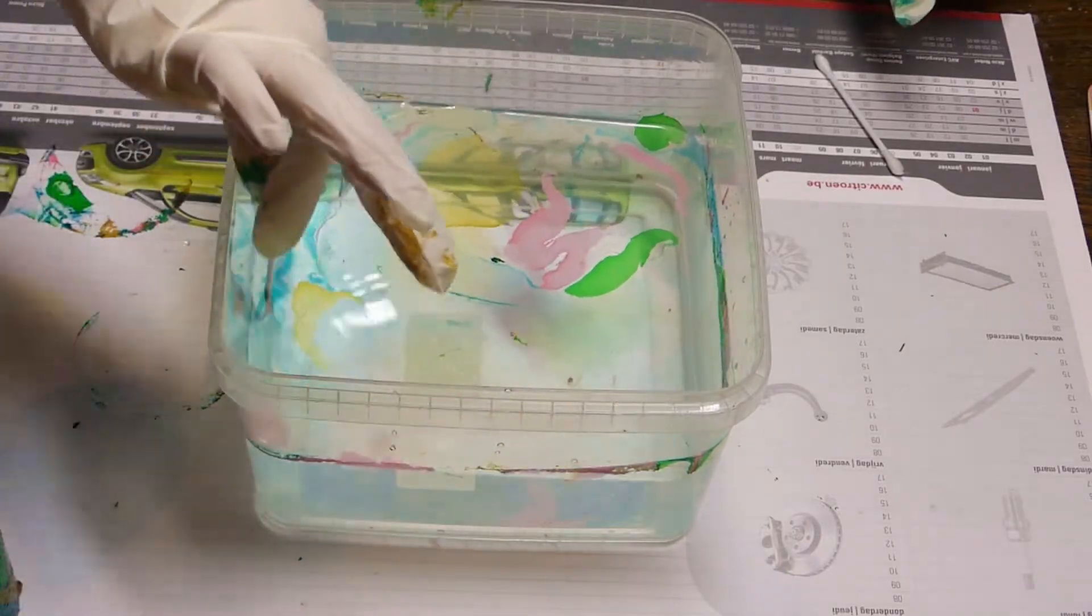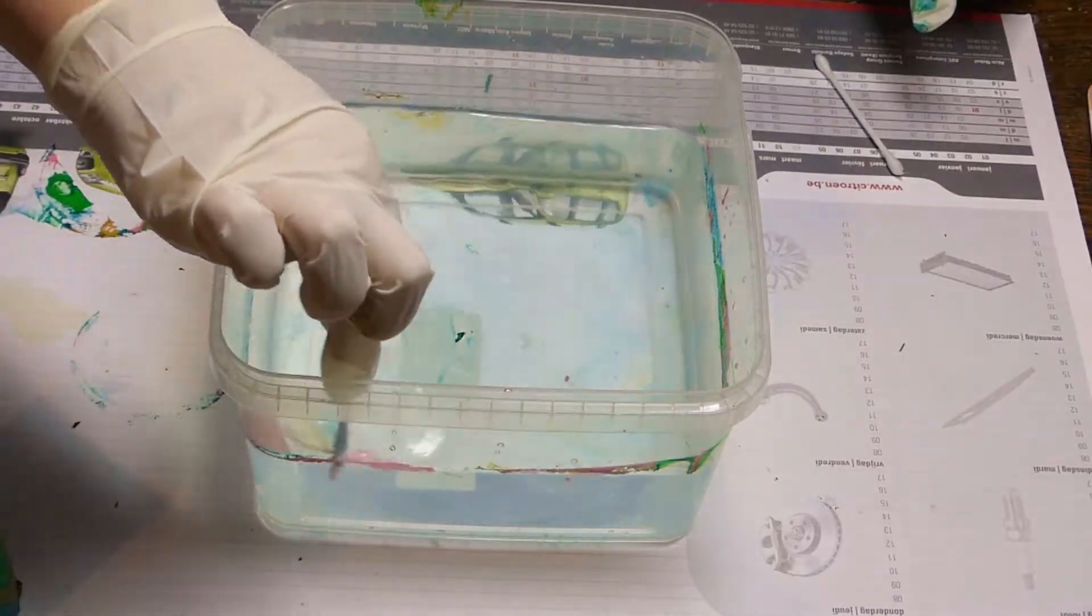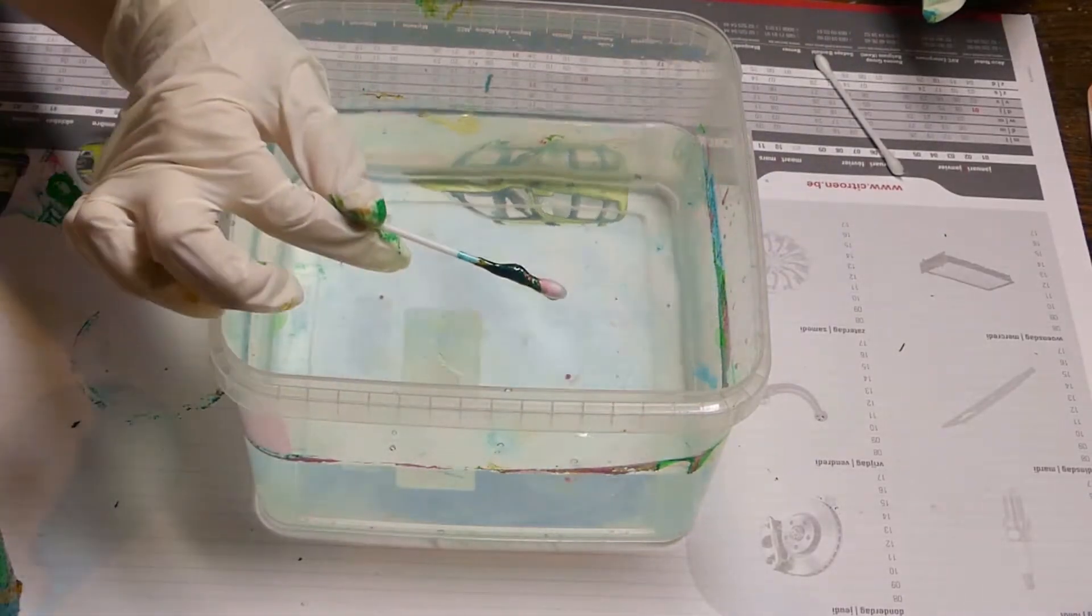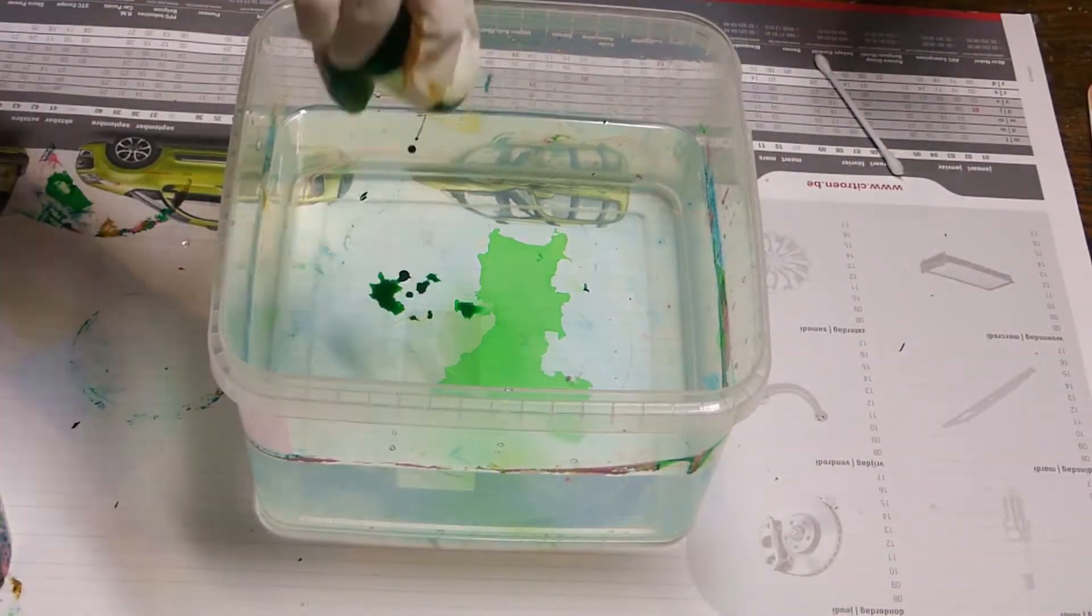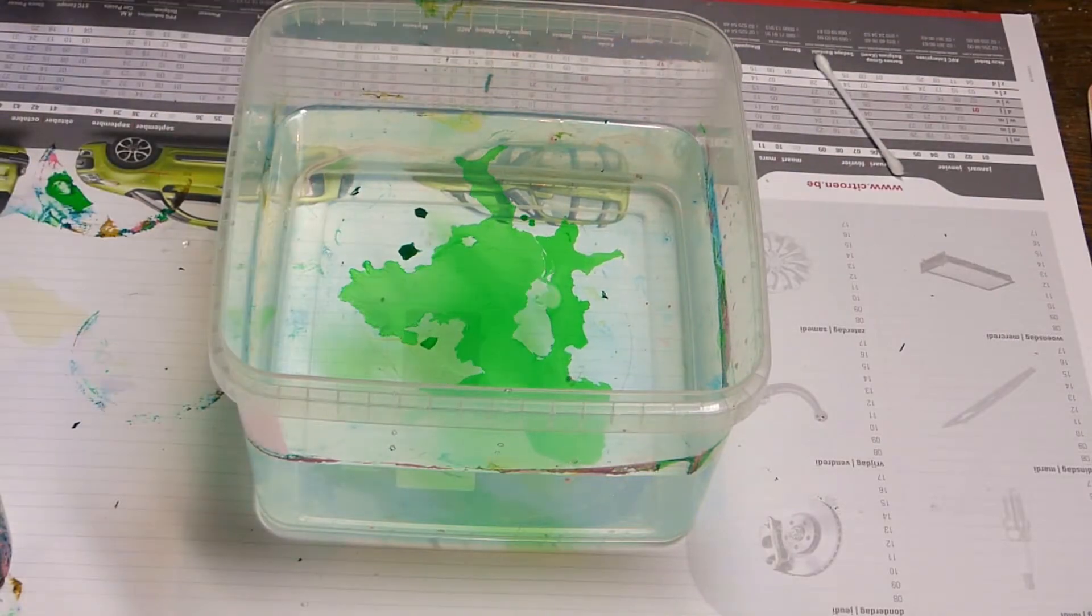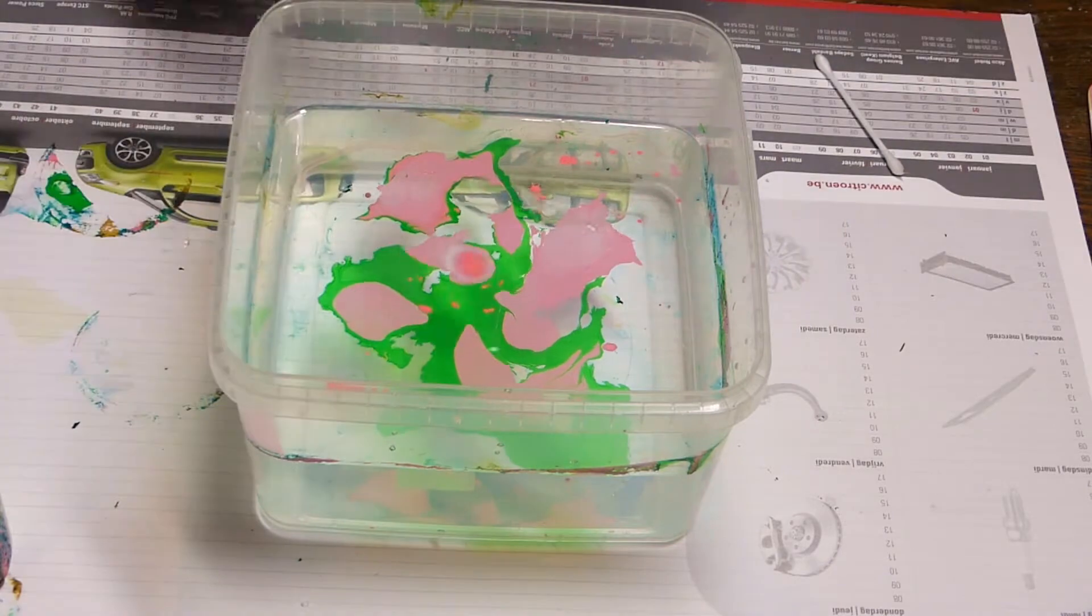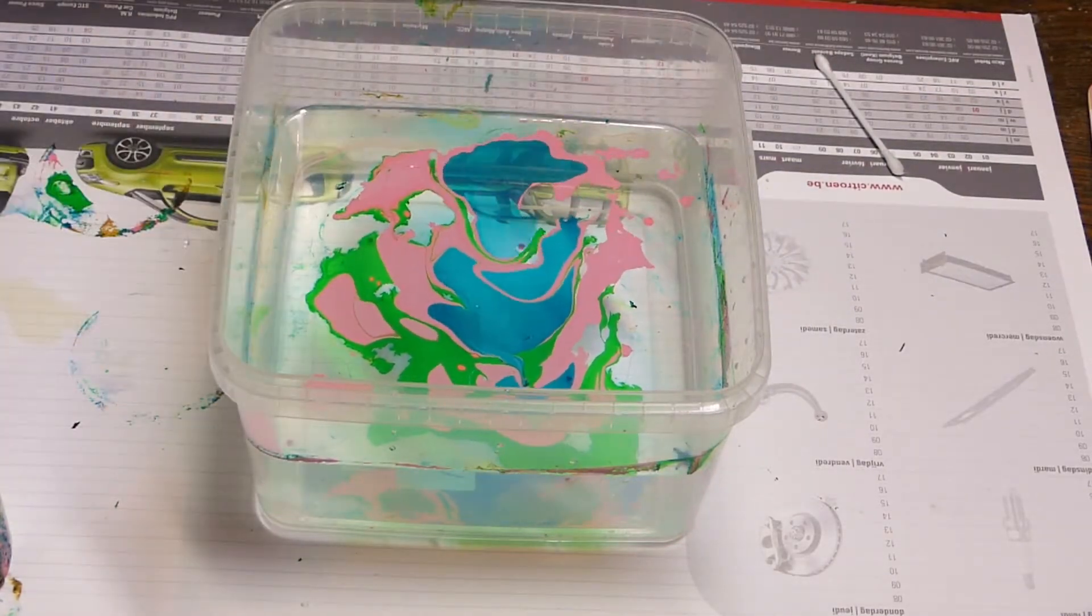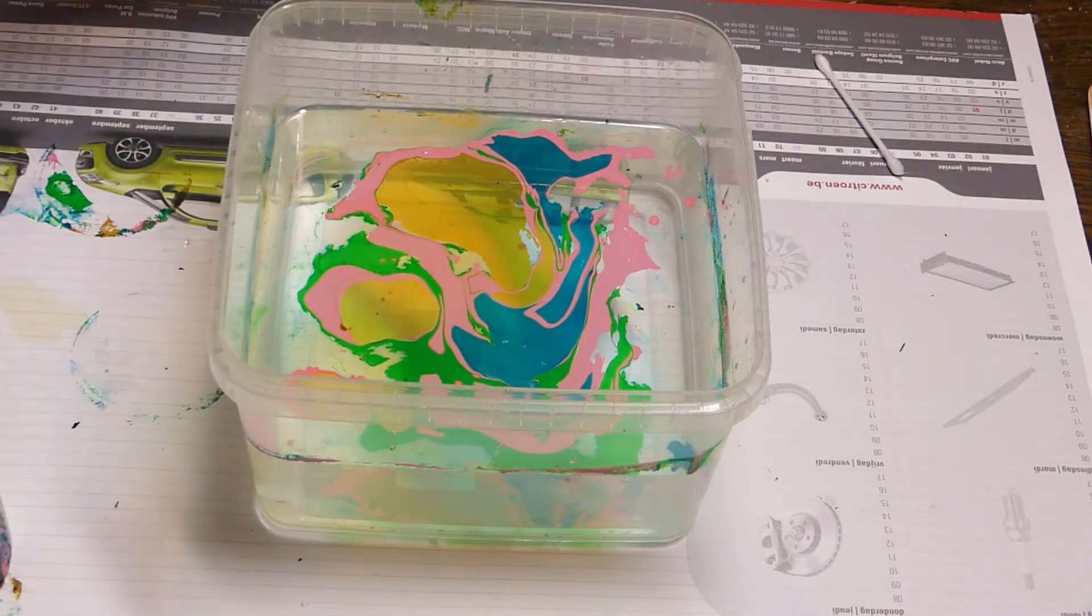You can add new paint on top of what's still left in your water or you can clean the water up first by going through it with a q-tip. Which is what I'm doing here. Add new paints to the water, create a design with your toothpick and roll the uncovered part of your candle in it.